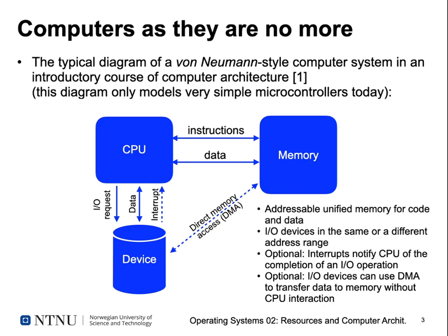We have three major components in our computer system: the central processing unit or processor, a unified memory that contains instructions and data, and one or more devices for doing input and output. The CPU can address either memory locations — fetching instructions or data from memory — and the CPU can also send requests to IO devices to read or write data.